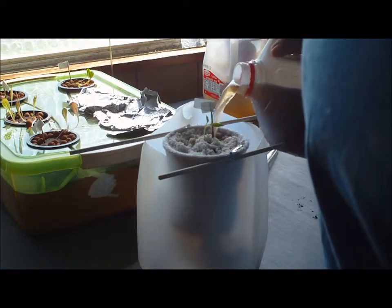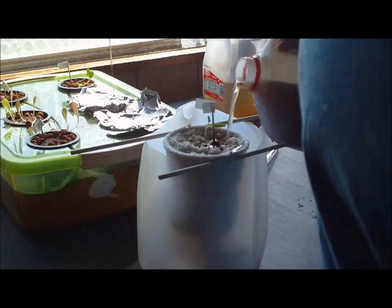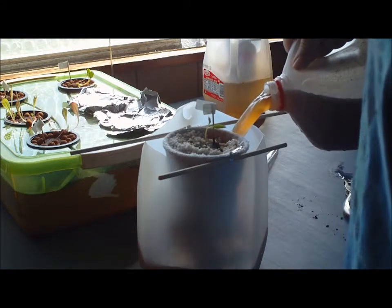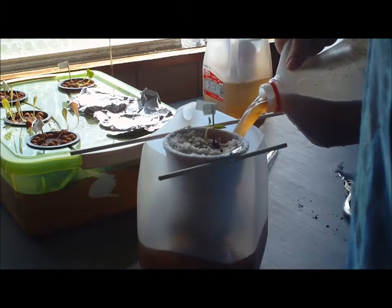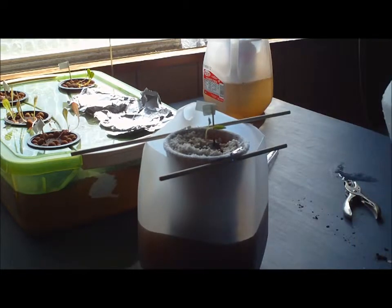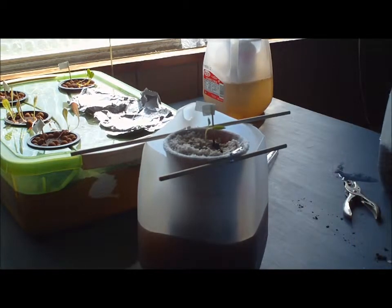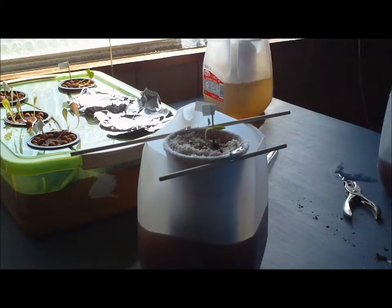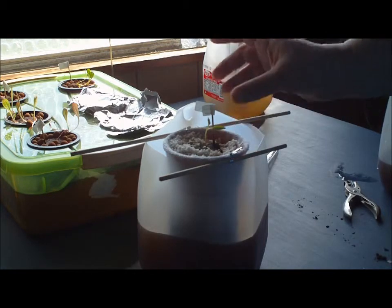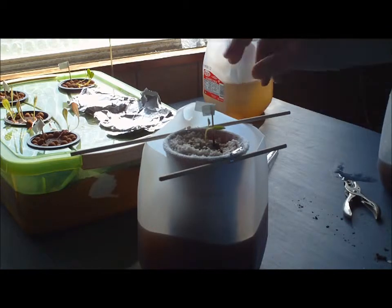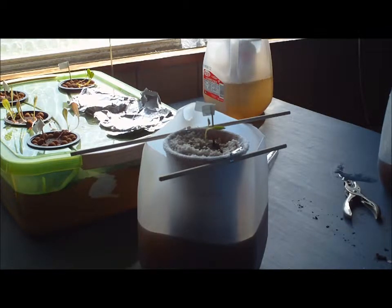But basically what will happen is that the sock being cotton will act as a wick. And I'm going to fill that up about halfway I guess that is. The cotton will act as a wick and will draw the moisture in the nutrient solution up into the perlite which will allow it to wick into the roots of the plant. And in theory we should have a little happy pepper plant there.